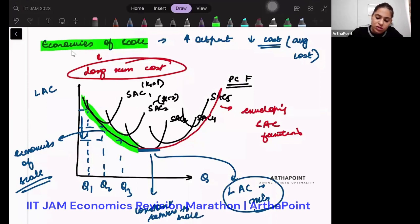And if you notice here, what is happening? As my output is increasing from Q5 to Q6 to Q7 and so on, my cost is also increasing. So if my cost is increasing, I have diseconomies of scale.